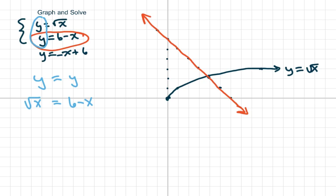You square both sides, you get x equals 6 minus x squared, and that's going to give you x equals 36 minus 12x plus x squared. I'm going to rewrite this a little bit.